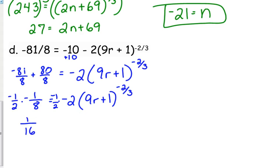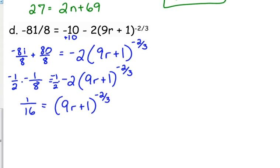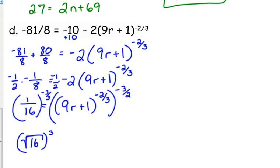We get positive 1 over 16 equals 9r plus 1 to the negative 2 over 3. Raise both sides to the negative 3 over 2 power. First things first, get rid of the negative by flipping over that fraction. So that's going to be the square root of 16 cubed. I got rid of the negative exponent by flipping it over, and then I just wrote the exponent in radical form. Now we are taking the square root, this is one of them where we have two possibilities now.